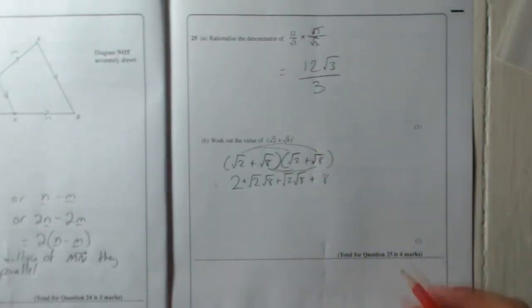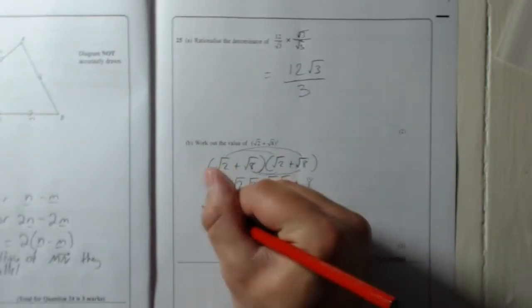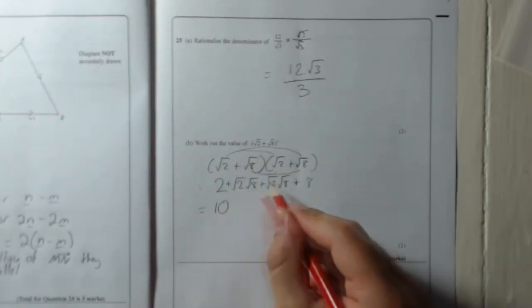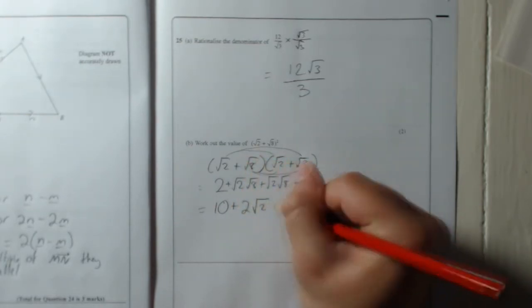Okay, so let me just tidy it up. I've got a 2 and an 8, so 2 plus 8 is 10. And I've got two of these root 2 root 8, so I'm going to write plus 2 root 2 root 8.